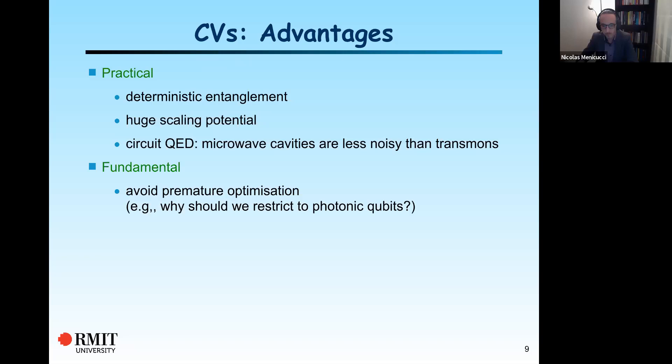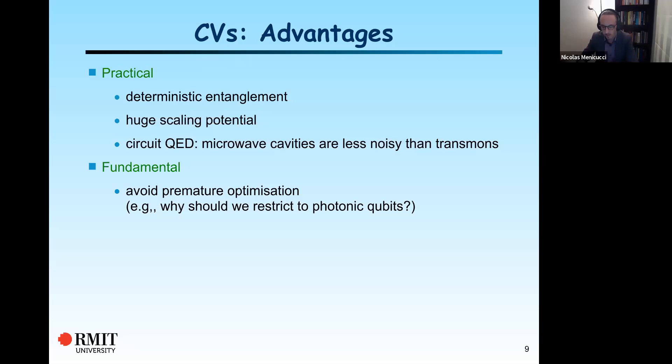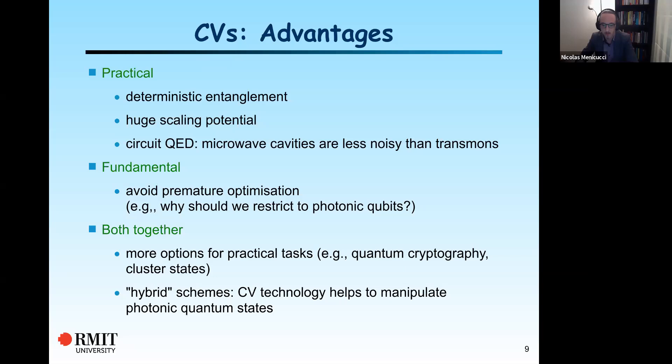At a fundamental level, we have the full mode — we don't need to restrict to a photonic qubit. This avoids premature optimization. From the CV perspective, the photonic qubit is just some particular wave function choice. You could choose the zero-photon vacuum state as your zero and the one-photon wave function as one, but from a theoretical point of view there is no need to do that. Both together, there are more options for practical tasks — quantum cryptography has been well developed in the CV domain, and there are hybrid schemes where CV technology can help manipulate photonic quantum states.